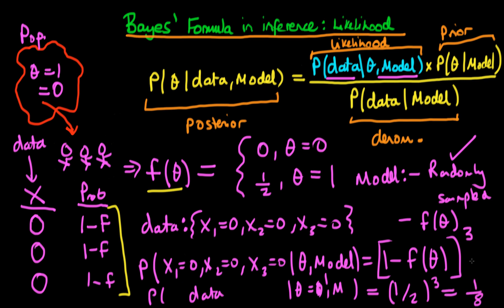We've used the likelihood function to derive the probability of the data under two circumstances: where the individuals come from an uninfected tribe, and where they come from an infected tribe. In the next video, we'll talk about what is meant by a prior, how to formulate it in this case, and how to use the likelihood and the prior to arrive at the denominator.